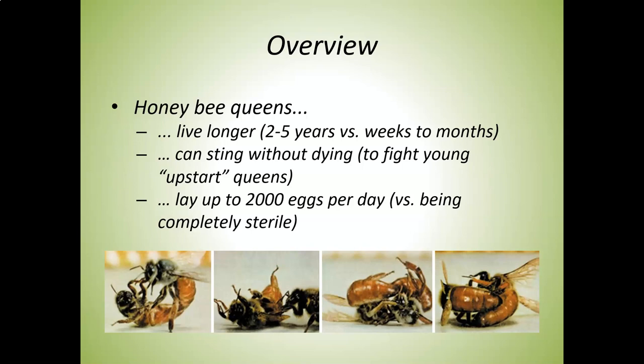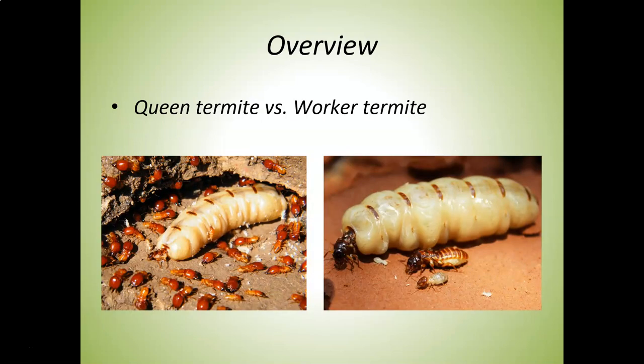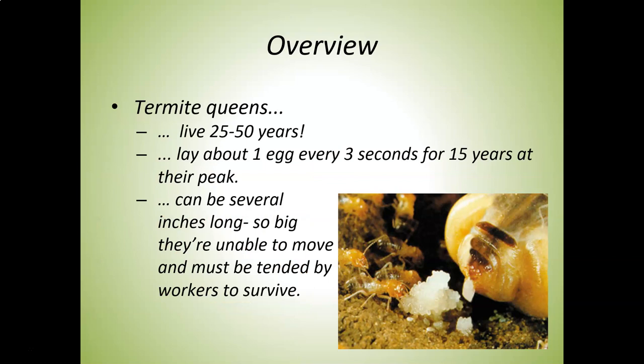Queen bees live a really long time and lay eggs like crazy, as opposed to the worker bees that are sterile. They're identical in genetic sequence but very different in traits, physiology, appearance, and lifestyle. Termites are kind of the same way. The queen termite versus a worker termite — genetically identical, yet very different looking with different phenotypes and different roles in the nest.